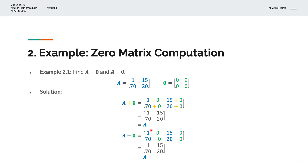Similarly, for A minus the zero matrix, we subtract the corresponding elements: 1 minus 0, 15 minus 0, and so on. That simplifies to 1, 15, 17, 20 — which is the original matrix A as well. So again, we've shown that matrix A minus the zero matrix is itself.